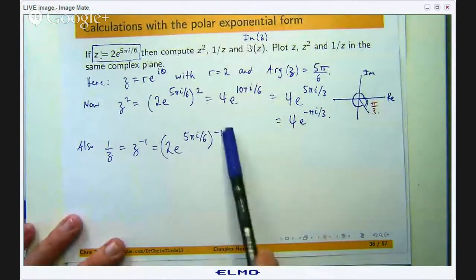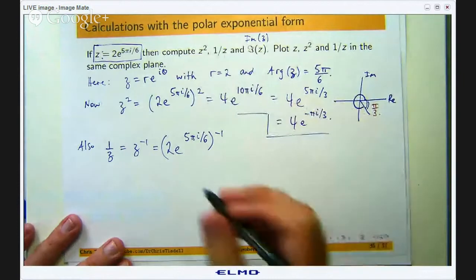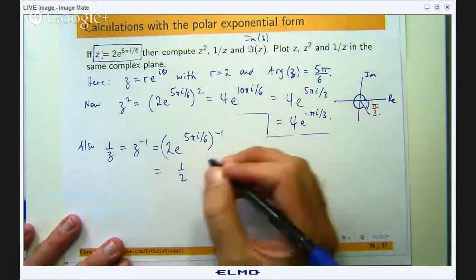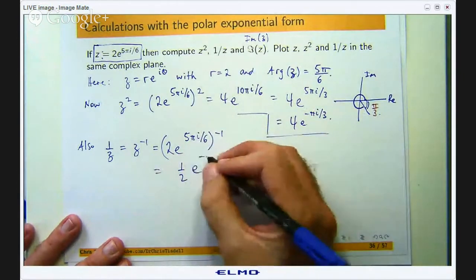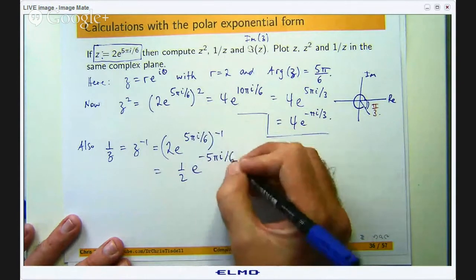Okay so distribute that again you are going to get 2^(-1) which is 1/2 and that negative 1 is just going to act on this and it is going to be -5πi/6.